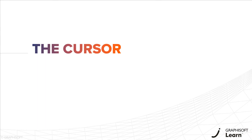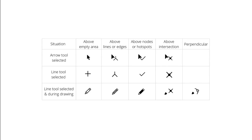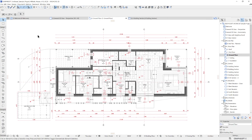In this video, you will learn about the ARCHICAD cursor. The cursor changes shape as we work, and that depends on the tool we are using and what we are trying to do at the time. When the standard selection tool, the arrow tool, is active, you will see the most common cursor which is the arrow.